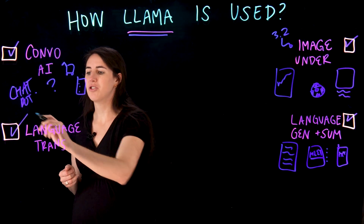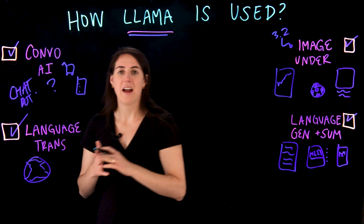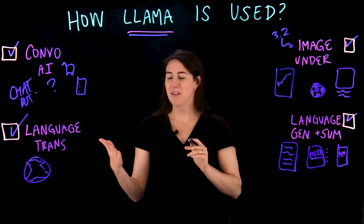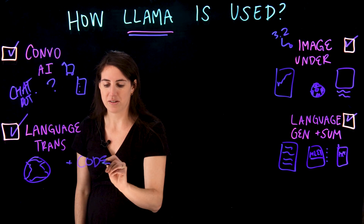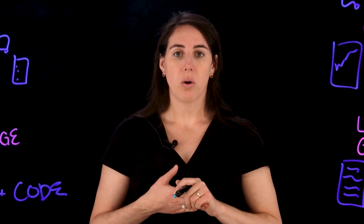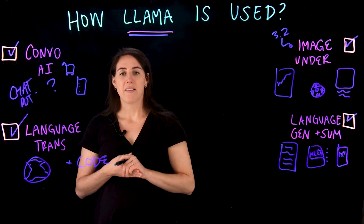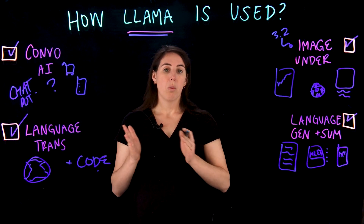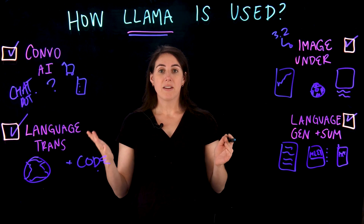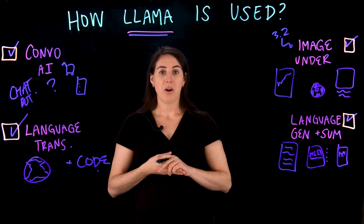Finally, we have language translation. This could be translating everyday languages from around the globe from one to another, conversing with a Llama-powered chatbot in those languages, or it could be code languages. For example, taking a Python snippet and converting it to Java, or even generating Python code from scratch by telling the model to write a Python loop. The original Llama models were mostly English, but later releases have included new languages — though it doesn't explicitly cover all languages in the world, so it'll be interesting to see how this feature continues to grow.